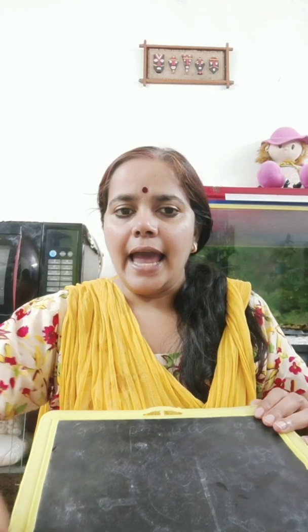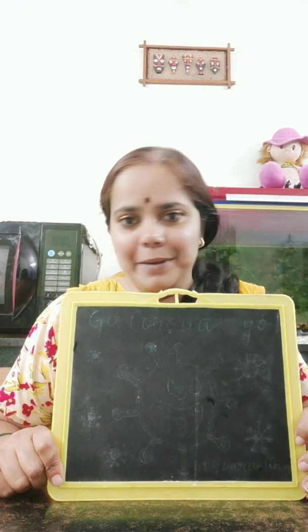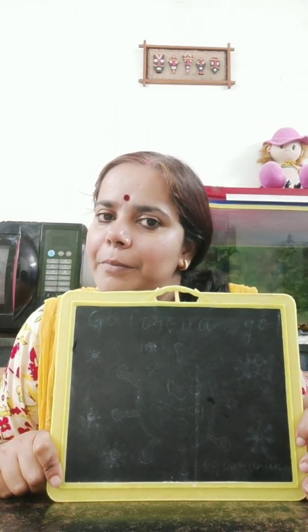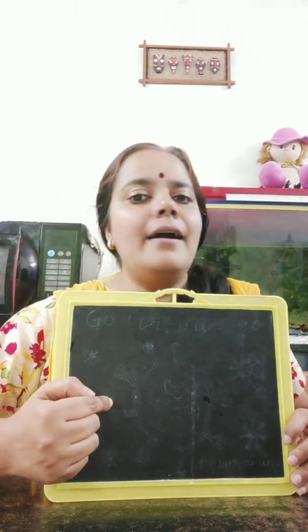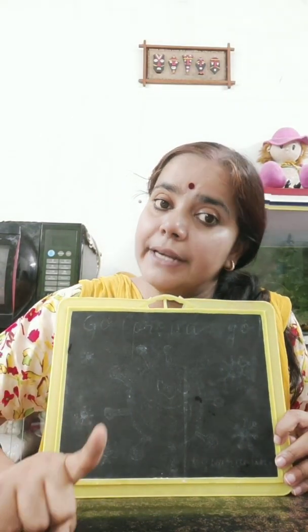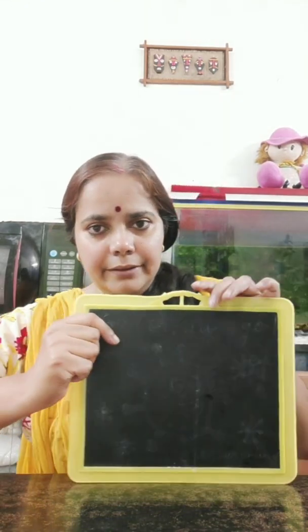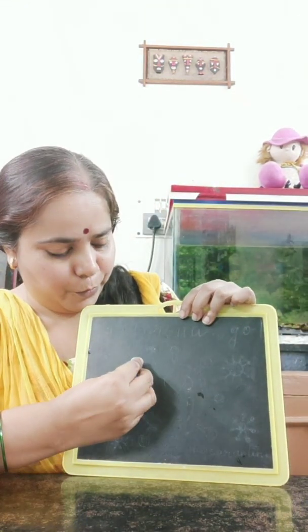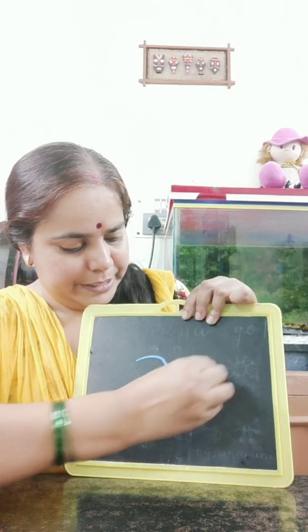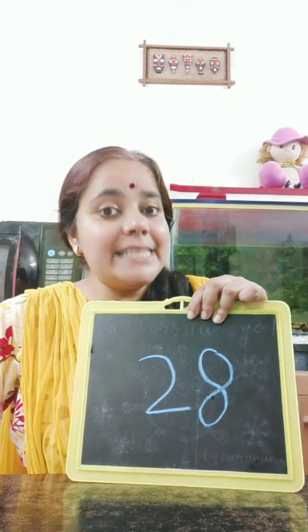Okay children, now you all will do this exercise. This is a mini blackboard for you all. What ma'am is going to do is write a number here, and you tell me first what number it is. And then you will tell me how many 10s there are and how many 1s there are in that number. Okay, are you ready? Just see what ma'am is writing — this is a surprise for you all. Which number is this?